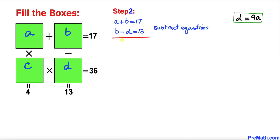Now let's subtract the bottom equation from the top. Changing the signs, the negative becomes positive and this term becomes negative. The B and negative B cancel, so we simply end up with A plus D equals 4.